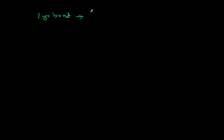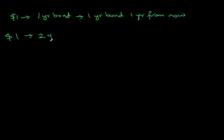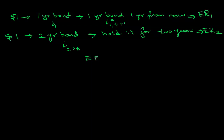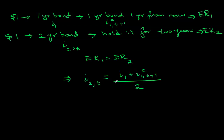You have two investment options. Option one: invest in a one-year bond today and reinvest in a one-year bond one year from now. Option two: invest in a two-year bond today and hold it for two years. In option one you earn nominal interest rate i1 today and expect some short-term rate next year. In option two you earn i2, the two-year bond rate today. Since both bonds are perfect substitutes with equal expected returns, with some math we find that the interest rate on a two-year bond equals the average of the current one-year rate and its expected value next year.